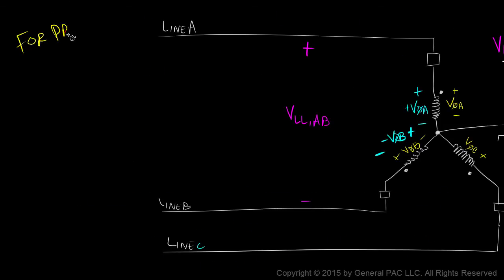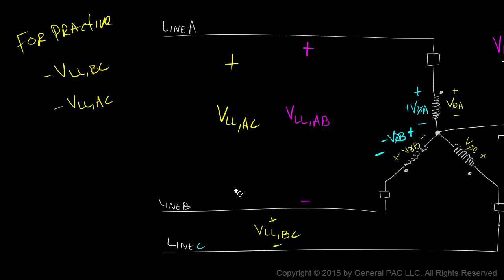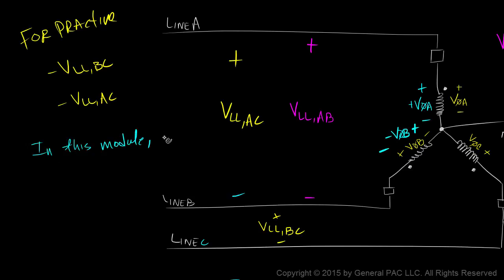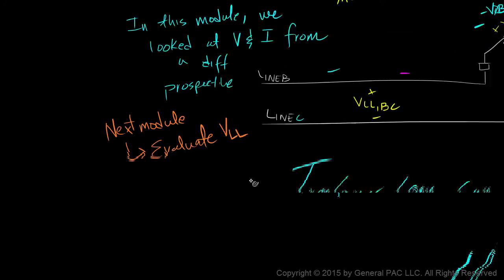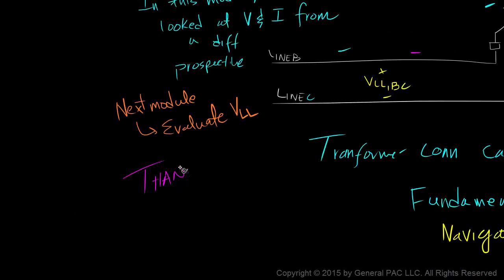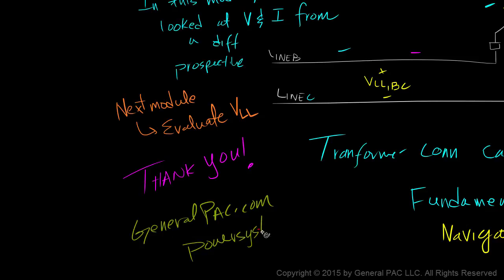For practice, let's try using this technique for the line-to-line voltage across line B and line C, as well as the line-to-line voltage across line A and line C. In this module, we looked at voltages and current quantities from a different perspective. In the next module, we'll evaluate the line-to-line voltage equation. Thank you. This module was brought to you by GeneralPack.com — making power systems intuitive.